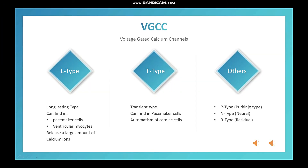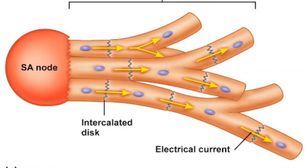Then T-type — why T? Because transient. You can find T-type in pacemaker cells. Remember that L-type can also be found in ventricular myocytes, but T-type cannot. T-type, also called transient type, is the main calcium channel necessary for the automatism of cardiac cells. Pacemaker cells don't need any impulse from outside to stimulate — they are automatic. They generate the impulse, which then flows down through the cardiac conduction system.